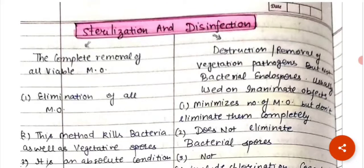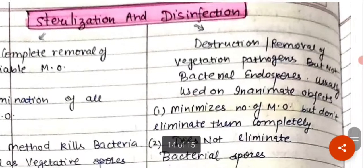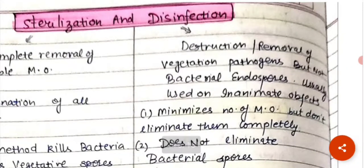The basic difference between sterilization and disinfection: sterilization means complete removal of all viable microorganisms — viable means those which can successfully survive. In disinfection, there is destruction or removal of vegetative pathogens but not bacterial endospores; it is usually used on inanimate objects. So in disinfection, complete removal of all microorganisms does not happen — bacterial endospores survive.